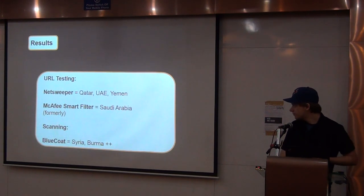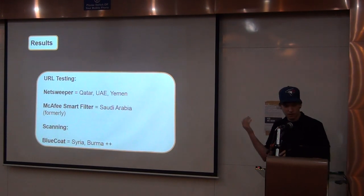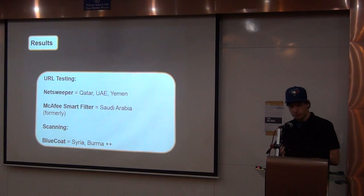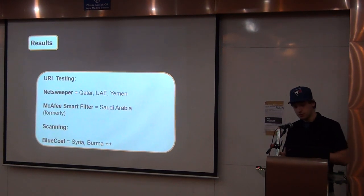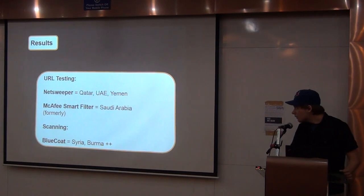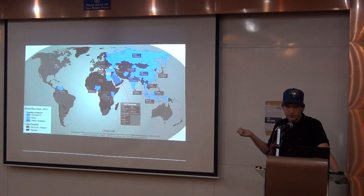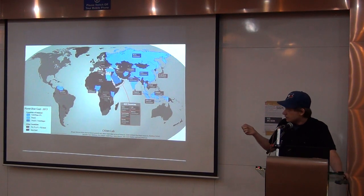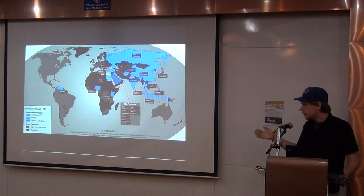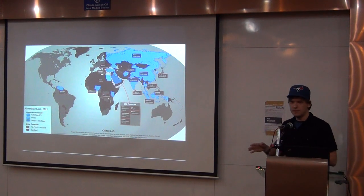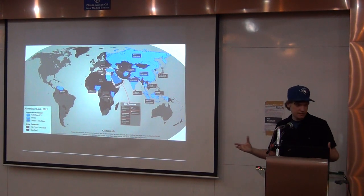As a result of this methodology, we found that NetSweeper, a Canadian company, was present in Qatar, United Arab Emirates, and Yemen. McAfee Smart Filter had been used in Saudi Arabia, and BlueCoat was present in Syria, Burma, and currently Saudi Arabia. We put this out on a map using Shodan data to find installations of PacketShaper, a surveillance product, and ProxySG, a filtering product, to find the intersection between installation locations and where they're present.